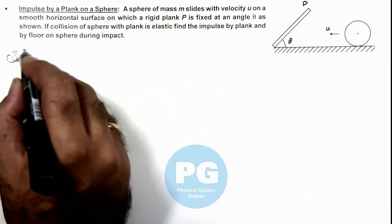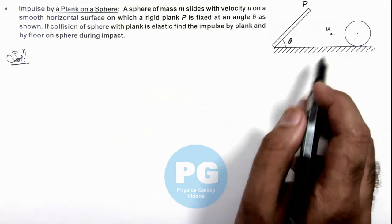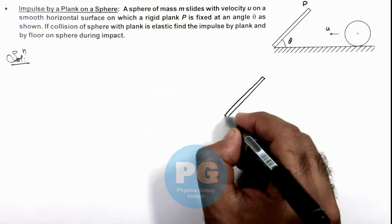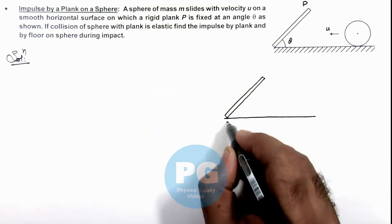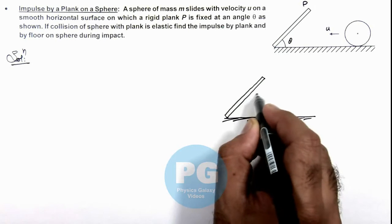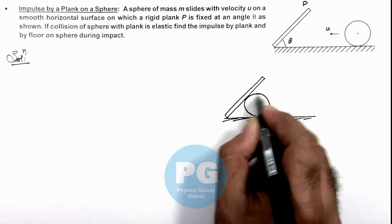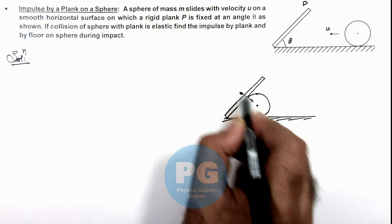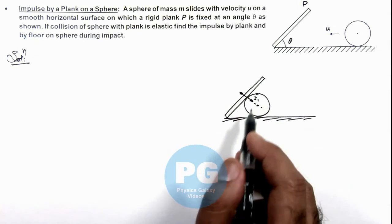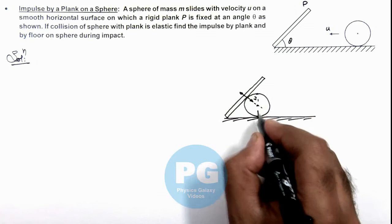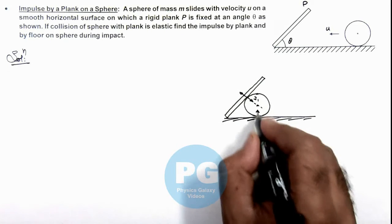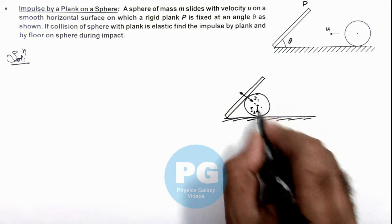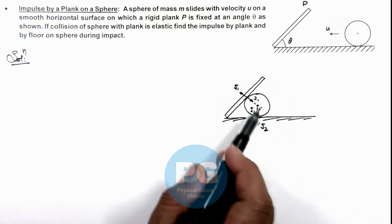Now, considering the point where the sphere hits the plank: the plank is positioned at an angle and this is the floor. When the sphere reaches the point where it hits the plank, it experiences a normal reaction. Along the direction of this normal reaction, J1 is the impulse imparted by the plank on the sphere. Due to this, the normal reaction at the bottom will also be impulsive, exerting an impulse J2. The same impulse J2 is imparted by the plank on the ground, and J1 is imparted by the sphere on the plank.